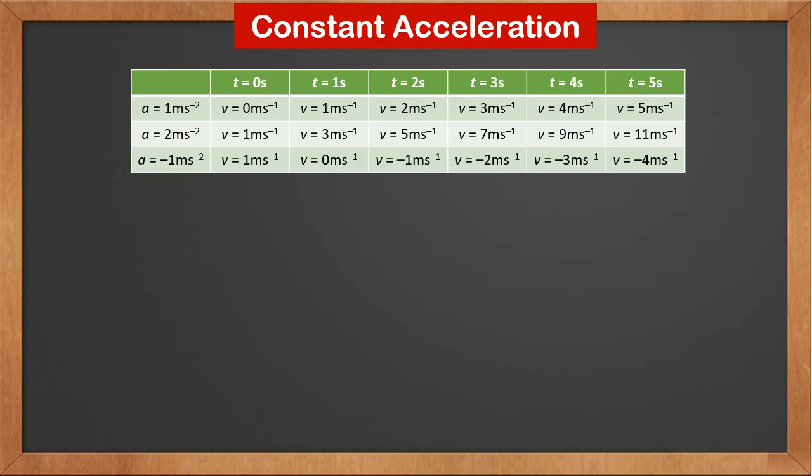On the third row of the table, the acceleration is minus 1 meter per second squared. If at time 0 the velocity is 1 meter per second, then at time 1 second the velocity becomes 1 minus 1, which is 0 meters per second. At time 2 seconds the velocity becomes 0 minus 1, which is minus 1 meter per second. At time 3 seconds it becomes minus 1 minus 1, which is minus 2 meters per second. The velocity keeps decreasing by 1 meter per second every second.